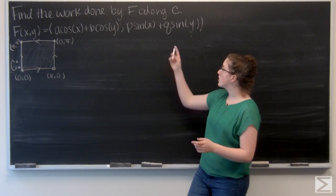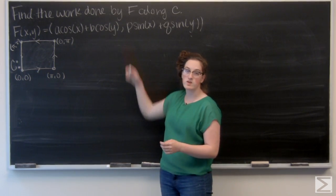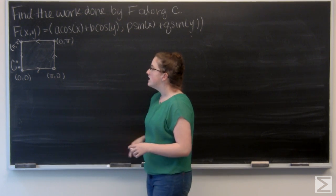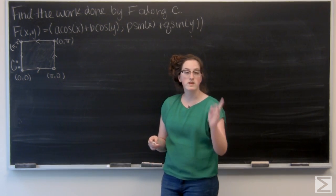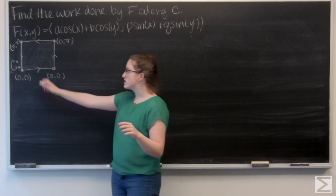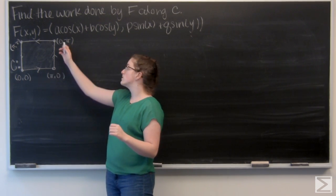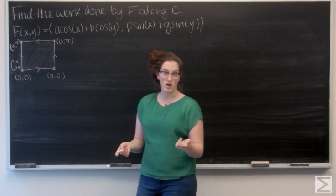For this question, I'm asked to find the work done by this given vector field F along our curve C. And C is the curve that traces out a square with vertices (0,0), (π,0), (0,π), and (π,π), and it's oriented counterclockwise.